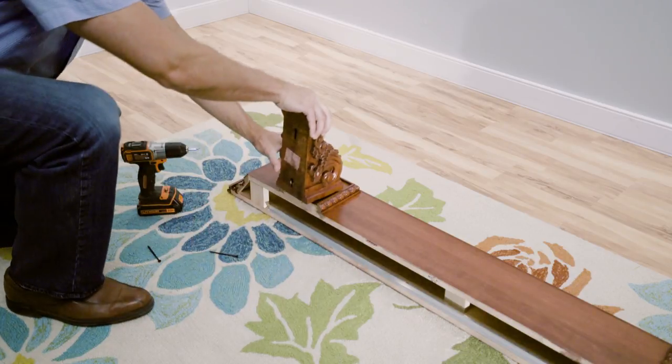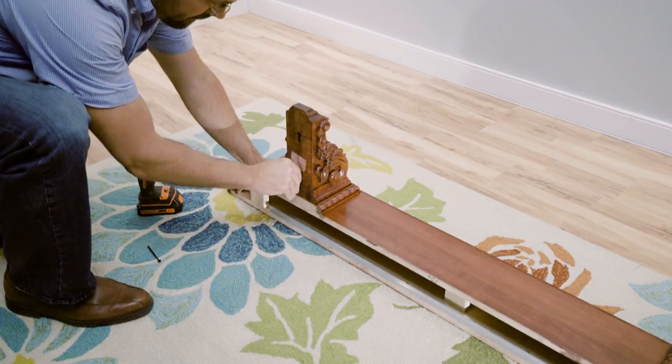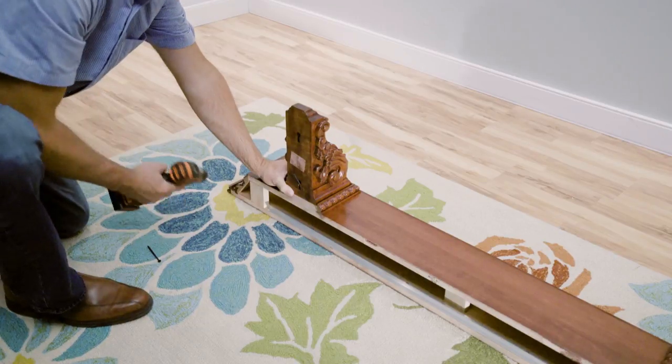Attach the corbels to the shelf by turning the shelf on its face. To avoid scratching the shelf finish, use a soft surface like a carpet.